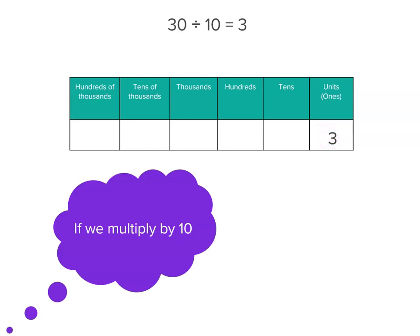Now, let's go back over that. If we multiply by 10, the digits move to the left. If we divide by 10, they move to the right.